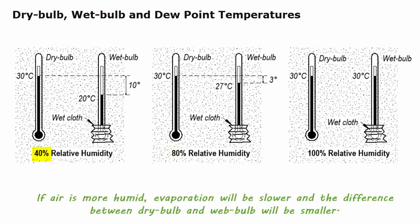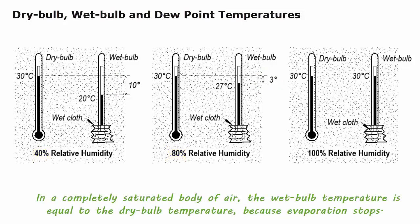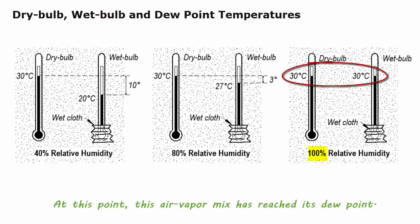If air is more humid, evaporation will be slower and the difference between dry bulb and wet bulb will be smaller. In a completely saturated body of air, the wet bulb temperature is equal to the dry bulb temperature because evaporation stops. At this point, this air-vapor mixture has reached its dew point.